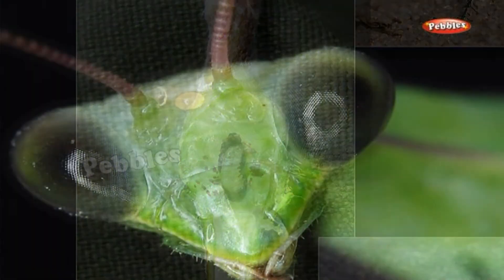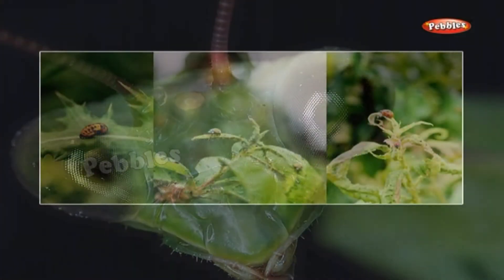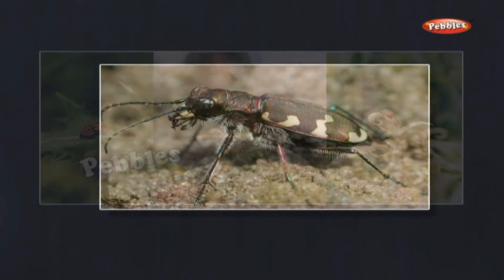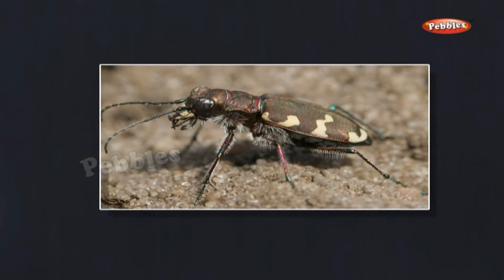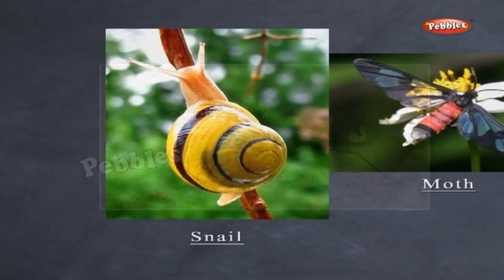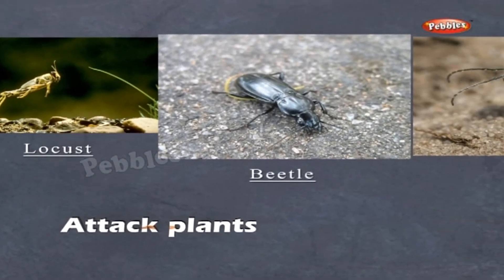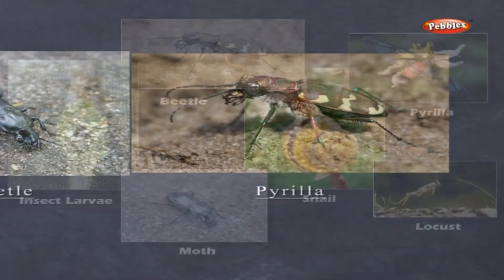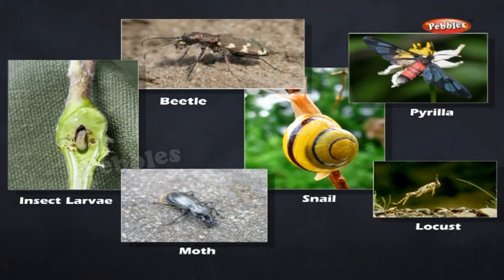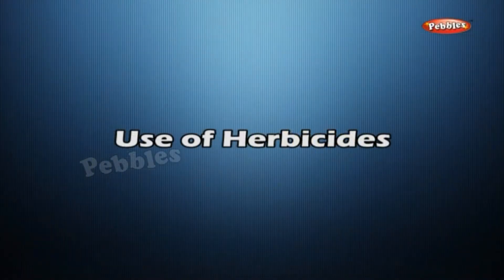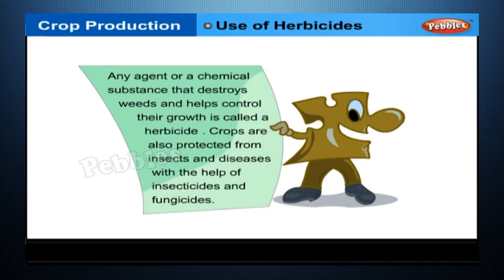Aphids and leafhoppers suck plant juices. Termites and white ants attack the roots of crop plants. Most insect pests are controlled by spraying insecticides. Use of Herbicides: any chemical substance that destroys weeds and helps control their growth is called a herbicide. Crops are also protected from insects and diseases with the help of insecticides and fungicides.